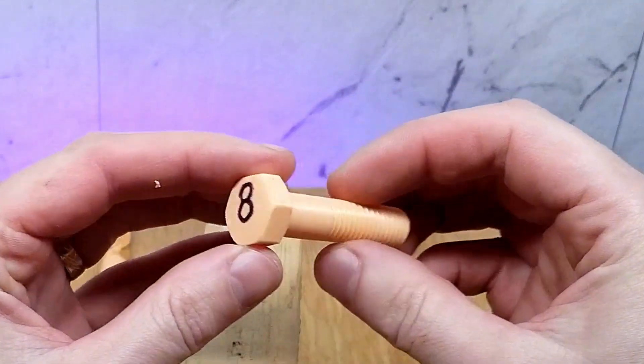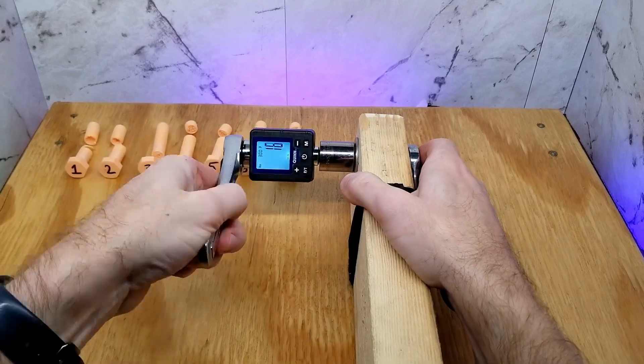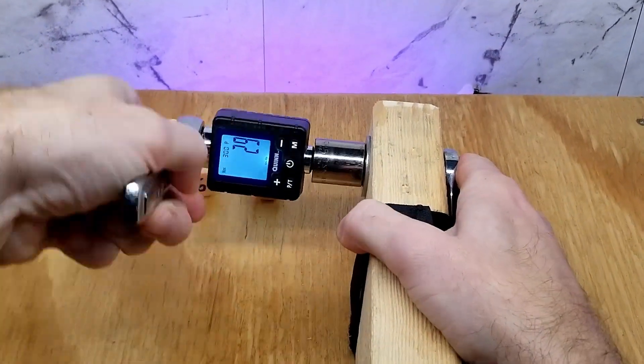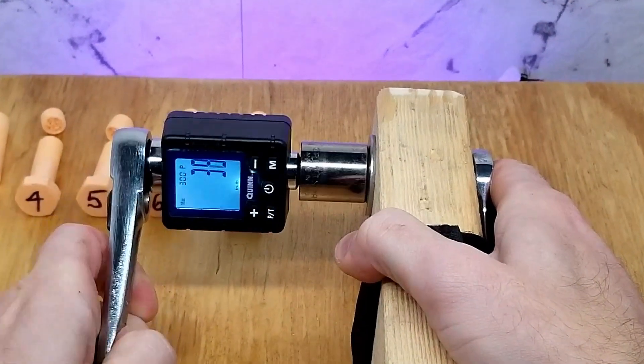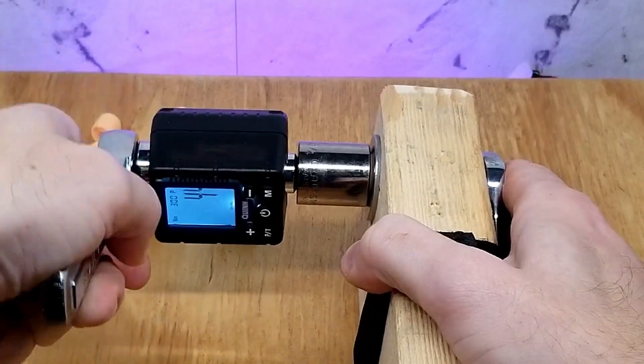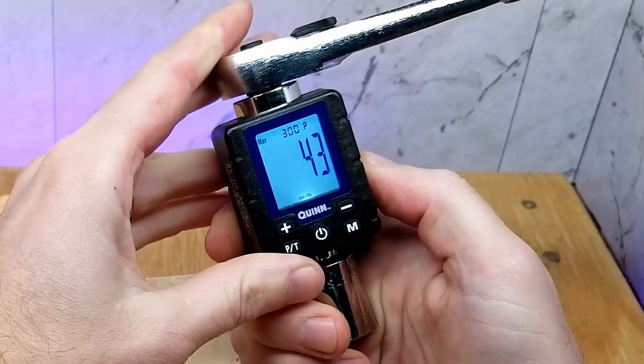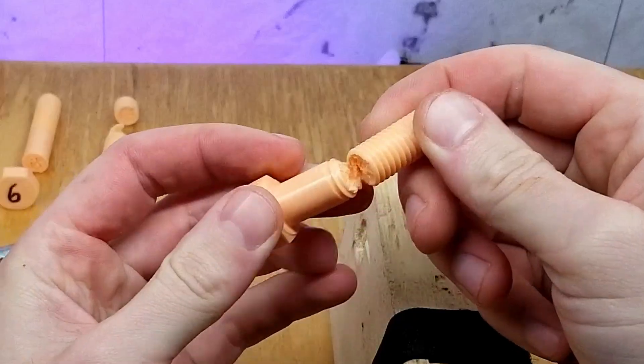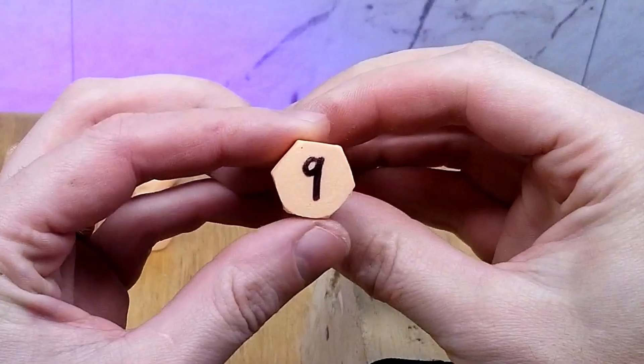On to number eight, 1.6 millimeter wall and 60% infill. I'm going to say that was 43 inch pounds. This one didn't sever completely and I didn't pull it apart like the first one. I'll just record that one as 43 inch pounds before I forget and on to model number nine.